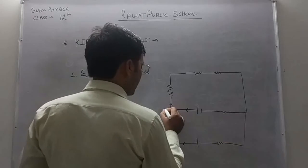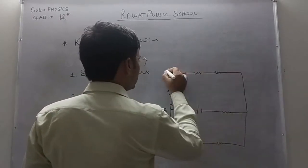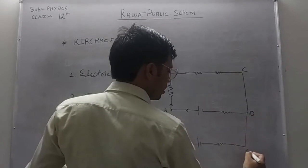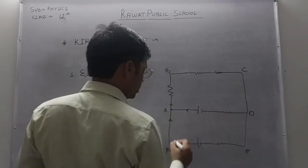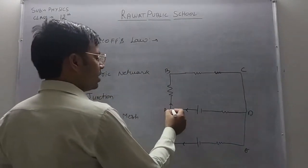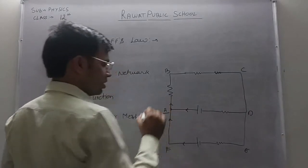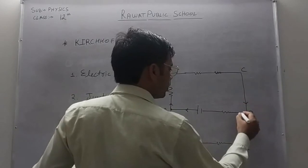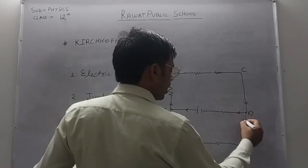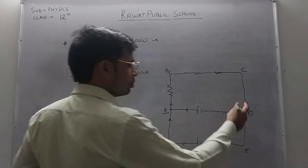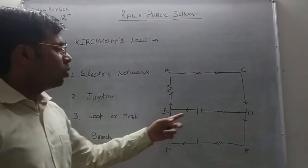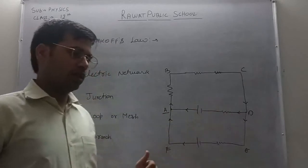So here if we name it as A, B, C, D, E and F as these points, then A is a junction. Similarly, this D is a junction. Here current from different directions is coming and meeting or simply it is going from that point. So this circuit kya anndar A or D kya hoongi, junction hoongi.